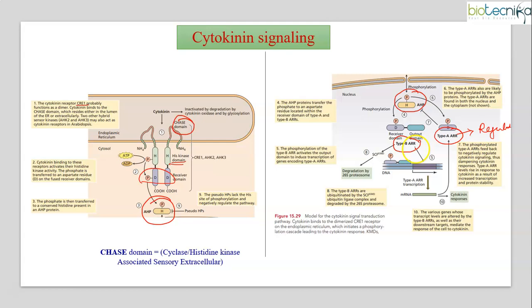The phosphorylated AHP transfers the phosphate to two types of ARR: Type B ARR and Type A ARR. Type A ARR acts as a regulator activating Type B, which in turn activates the genes for transcription, generating cytokinin response. It will also activate Type A ARR to generate the response. Basically, phosphorylation plays the key role in this pathway.